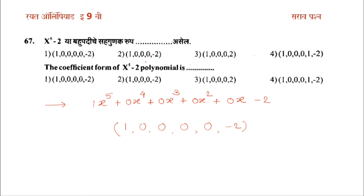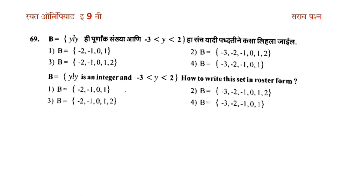So the coefficient form is 1, 0, 0, 0, 0, −2. Meaning the coefficient form equals [1, 0, 0, 0, 0, −2]. We can get these four variables from the polynomial.